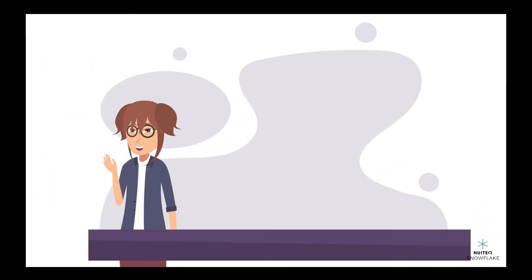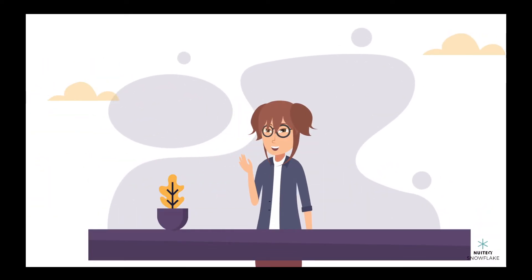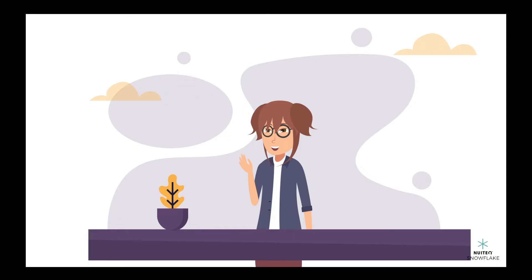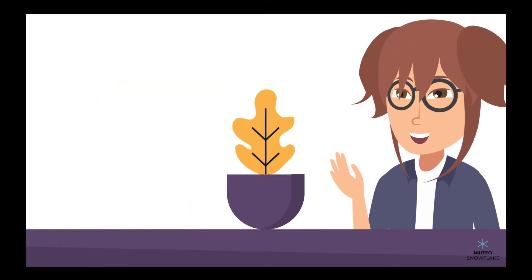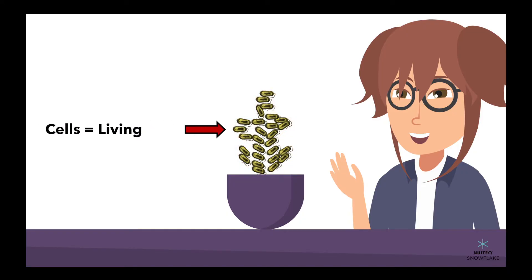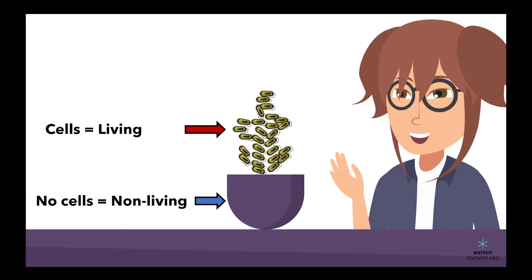But how can we tell if something is alive or not? Well, one way is to look for cells. Living things are made up of cells while non-living things are not. So if you see cells, you know you have a living thing on your hands. But if you don't see any cells, it's probably not alive.